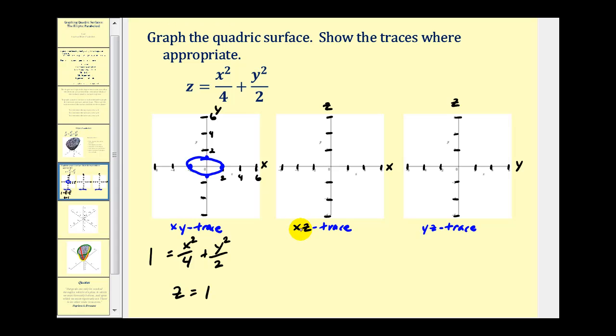Now to determine the xz trace, we'll set y equal to zero. That'll give us z equals x squared over four. And this will be a parabola. So let's go ahead and plot a few points to determine the graph.